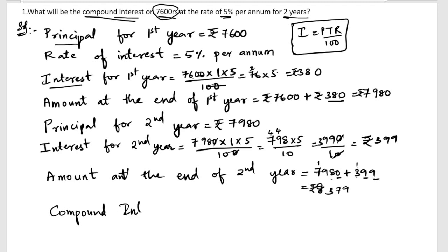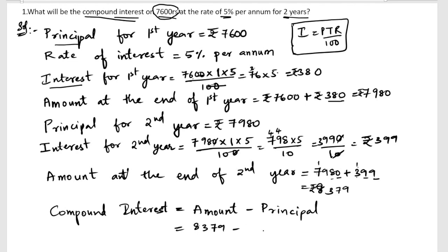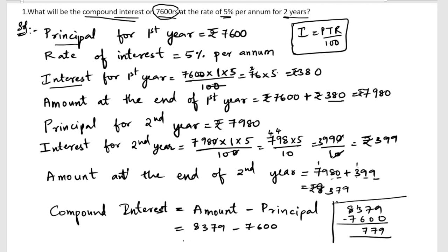Compound interest equals amount minus the original principal. So compound interest is 8379 minus 7600. Subtracting: 8379 minus 7600 gives us rupees 779. Therefore, the compound interest is rupees 779.